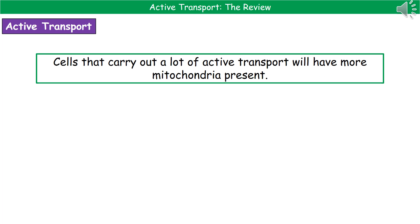Because active transport needs energy, we make ATP through the aerobic respiration process covered in our earlier topic. In order to carry out respiration, we need the subcellular structure called mitochondria. So what we find is that in any cells that carry out a lot of active transport, there will be larger numbers of mitochondria present.